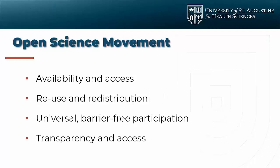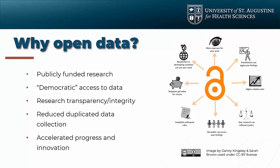Universal barrier-free participation is at the core of open science. There are other tangential benefits of transparency — being able to verify that when someone publishes a paper saying they've done a study that finds X, Y, or Z, individuals can go to the data itself and not only verify the analysis but also utilize that data to perform additional studies. Open data is really just a small sliver of that whole pie.